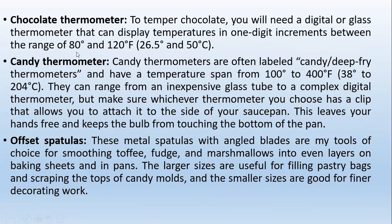A chocolate thermometer has a range of approximately 80–120°F (26.5–50°C) and can display temperature in one-degree increments, available in both digital and glass forms. A candy thermometer, often labeled as a candy or deep-frying thermometer, has a temperature span from 100–400°F (38–204°C). These range from inexpensive glass tube thermometers to complex digital ones. Whichever thermometer you choose, make sure it has a clip that allows you to attach it to the side of your saucepan — this leaves your hands free and keeps the bulb from touching the bottom of the pan, which is the main requirement for using a candy thermometer correctly.